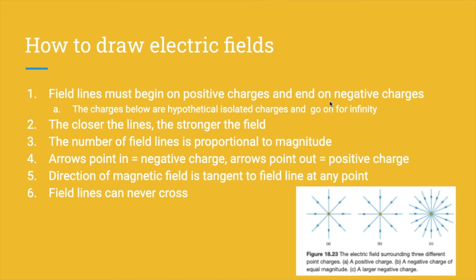Let's take a look at these rules in comparison to the pictures below. Picture A has arrows pointing out from the charge, which means that the charge is positive. B has the arrows pointing in towards the charge, therefore the charge is negative. And on C, you can see that there are a lot more lines coming into the center, which means that the magnitude is greater and the field is stronger. So comparing B and C, they're both negative, but C is going to be a much larger charge.